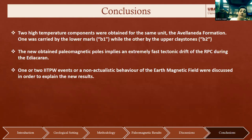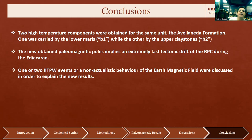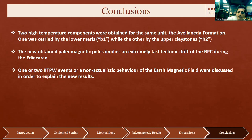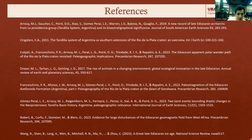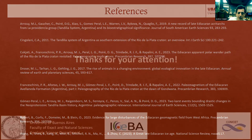The conclusions of this work are: two high-temperature components were obtained for the same unit, the Avellaneda Formation — one corresponding to the marls and the other to the claystones — and two different poles were obtained, implying extremely fast apparent polar wander for the Rio de la Plata Craton during the Ediacaran. We discussed two hypotheses: one or two inertial interchange true polar wander events, or non-actualistic behavior of the Earth's magnetic field, noting the problems with each.